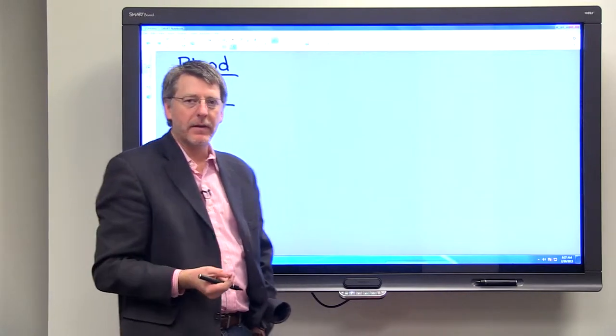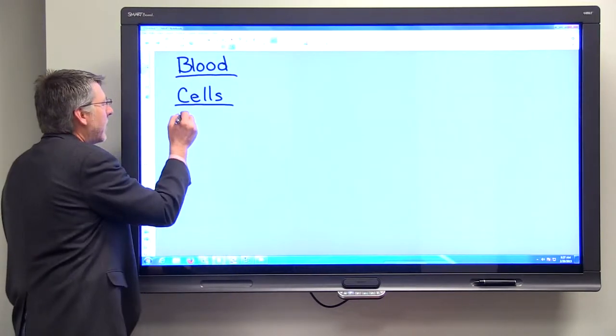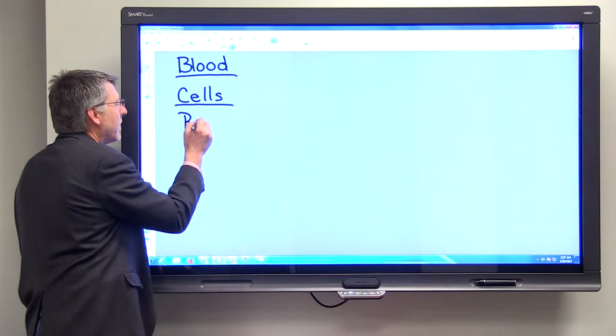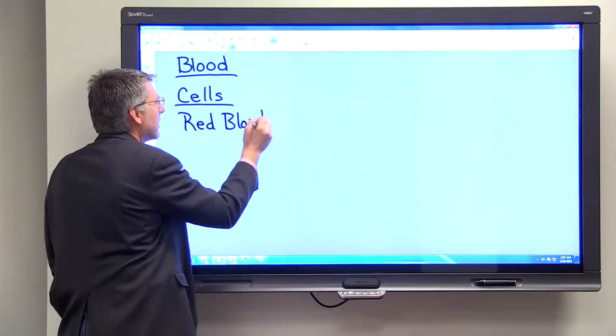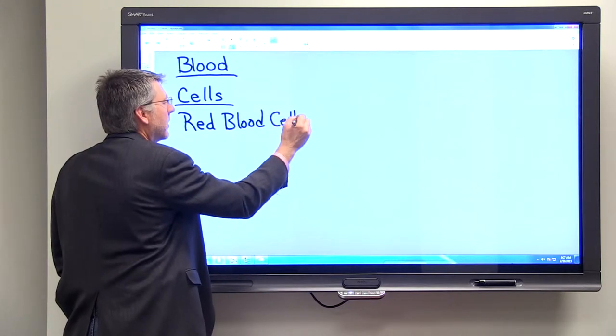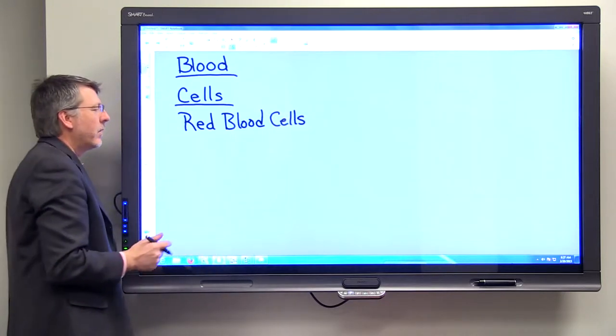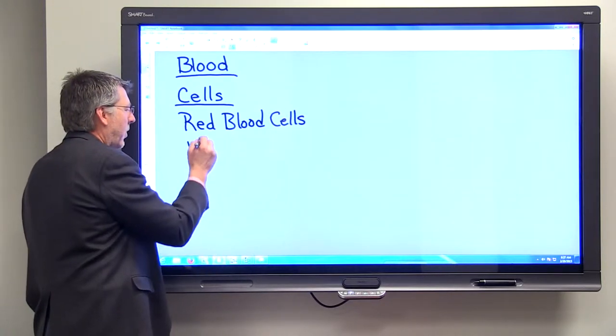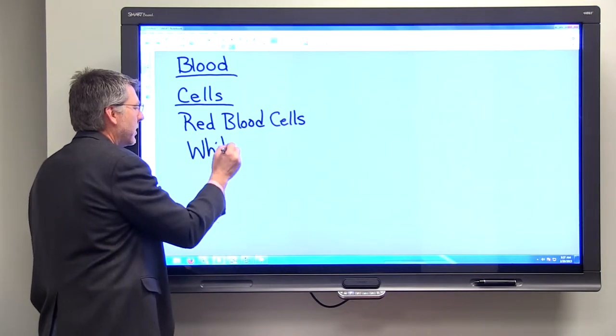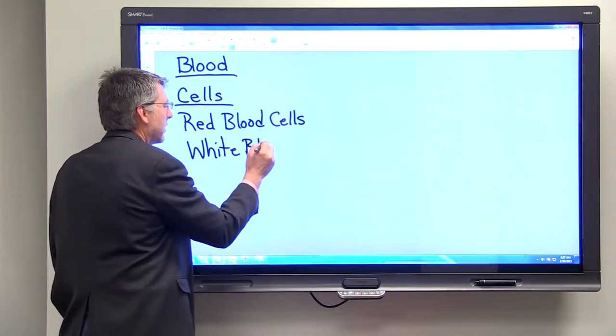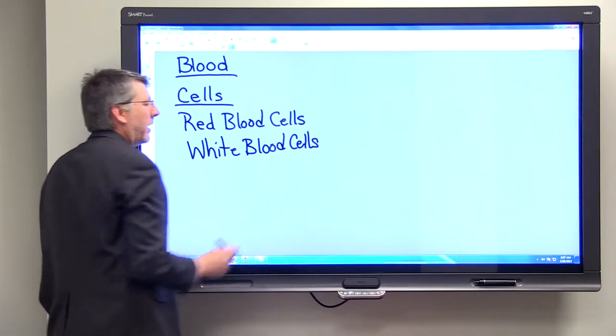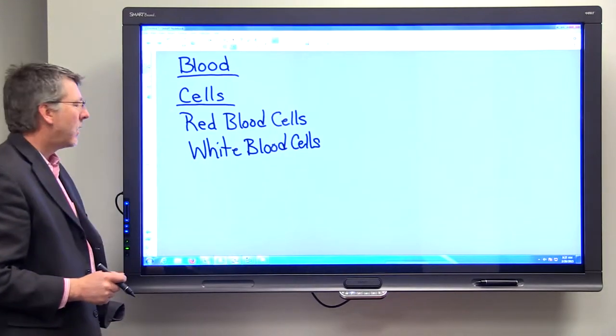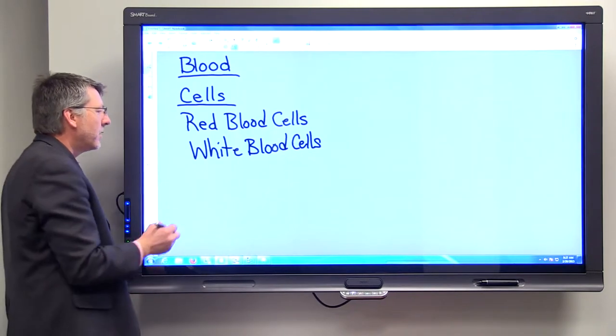Later on you'll learn more about the different kinds of blood cells. The blood cells include red blood cells, which are also called erythrocytes, and white blood cells, which are also called leukocytes.